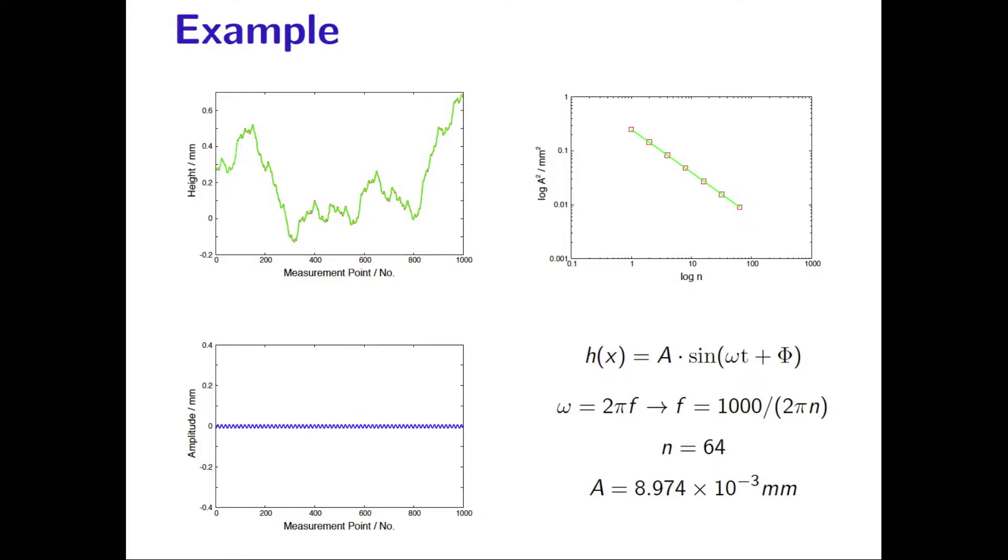We can now go even further and include more roughness components by changing n to 128 and then 256. We will stop this process now here, as with the naked eye it is not possible to see the difference anymore.